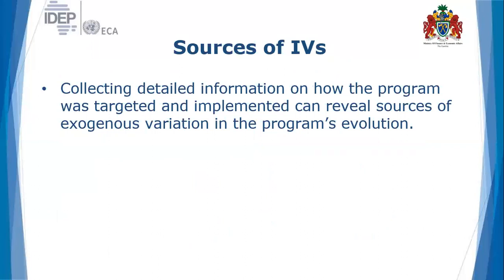How can evaluators source or identify instrumental variables? Generally, collecting data or information on how the program was targeted — through understanding the background, design, and implementation processes — can help evaluators identify sources of exogenous variation. It is important for evaluators to have a good understanding of program design and implementation so they can identify instrumental variables that are correlated with participation but do not affect the outcome.